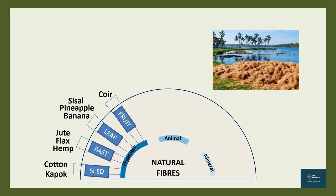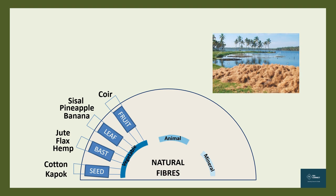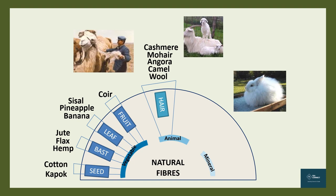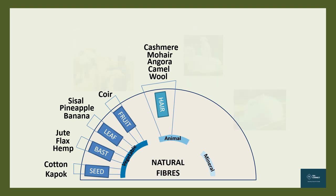Moving on to animal fibers — they are found as the hair of mammals or as a secretion. Wool, camel hair, angora, mohair, and cashmere are all hair fibers. Cashmere comes from the Kashmiri goat, commonly known as pashmina wool. Silk is a secretion fiber.